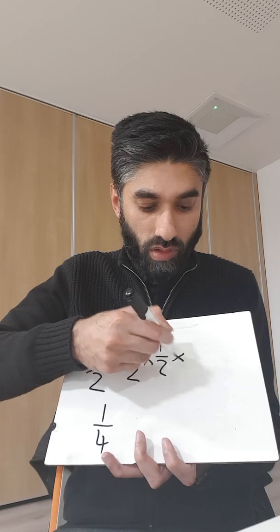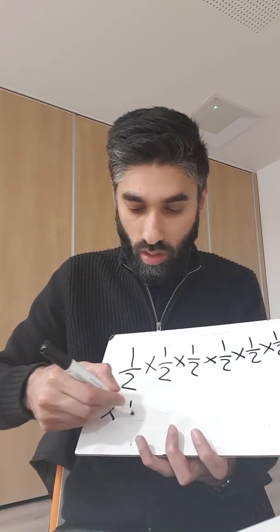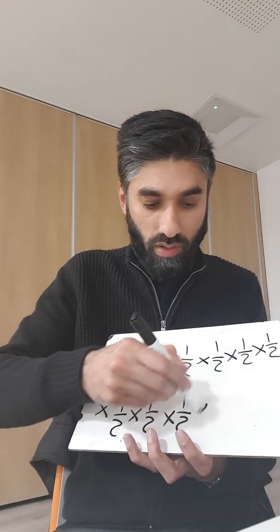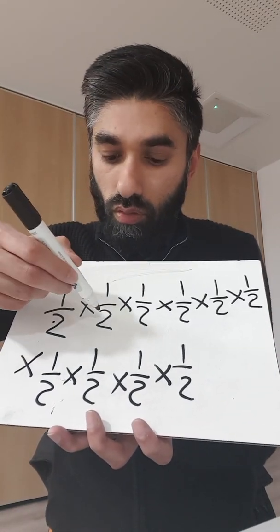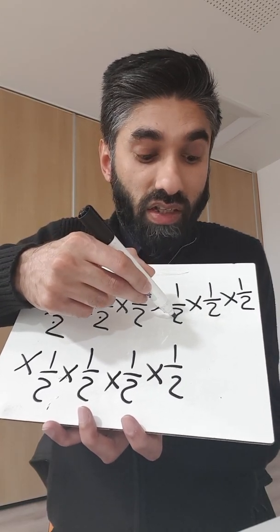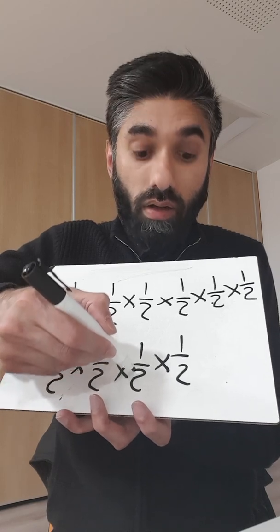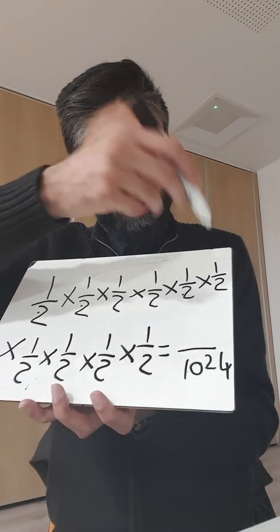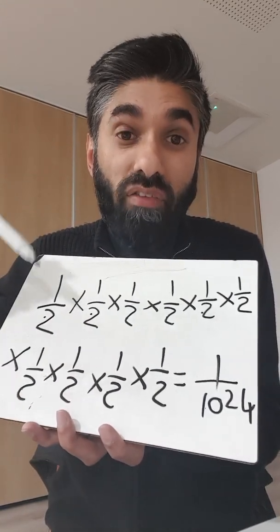So let's calculate this fraction — we're going to multiply these denominators: 2 × 2 = 4, × 2 = 8, × 2 = 16, × 2 = 32, 64, 128, 256, 512, and 1,024. And one times one times one... is just one. So there is a one out of 1,024 chance of winning this pound coin, because I flipped it ten times.